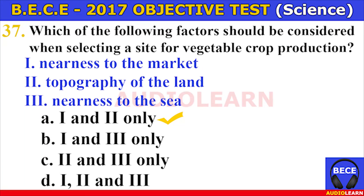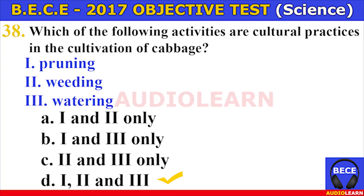Number thirty-six. The first factor to be considered when deciding to cultivate a particular vegetable is A. cultural practices, B. selection of land, C. harvesting, D. method of propagation. The answer is B. Selection of land. The first factor to be considered when deciding to cultivate a particular vegetable is selection of land.